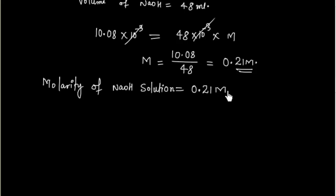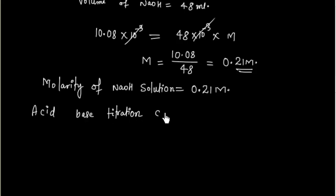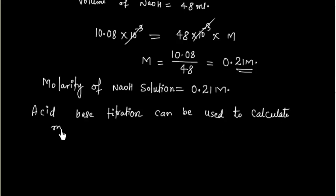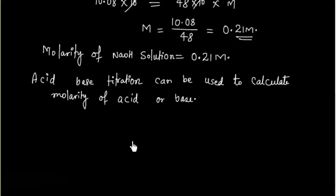So, acid-base titration can be used to calculate the molarity of an acid or base. The idea is simple: find the moles of one substance, write the reaction, find the moles of the other substance, and then use molarity times volume equals number of moles.